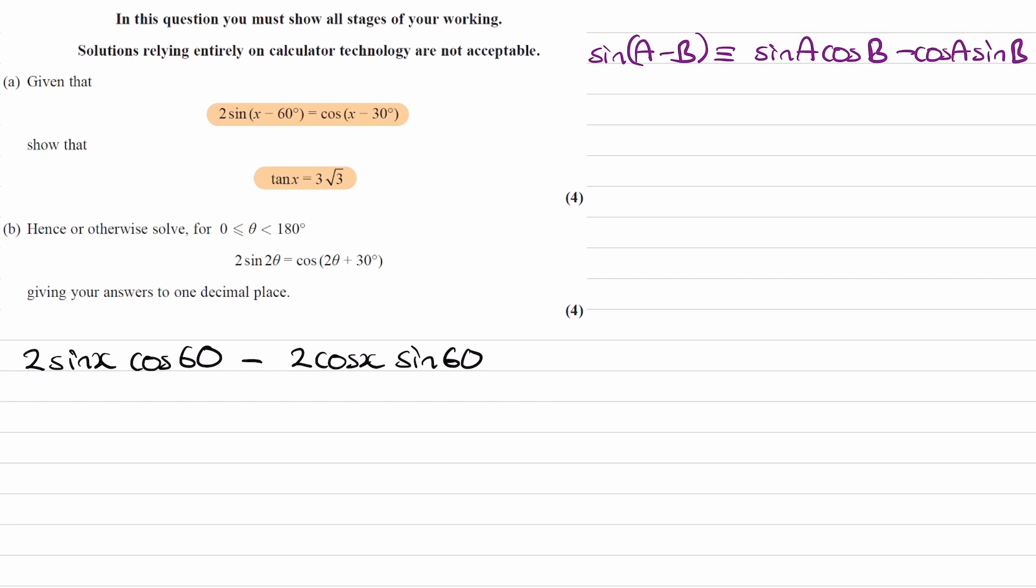With the right hand side, cos(x - 30°), that will become cos x cos 30° + sin x sin 30°. And that's using this rule.